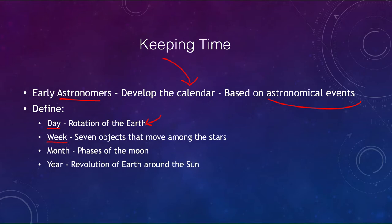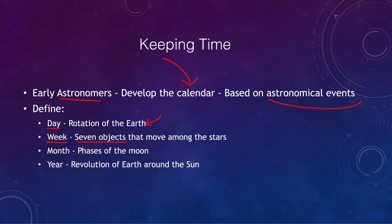A week is something students sometimes ask about — how is a week related to astronomical observations, and why do we have seven days and not eight, ten, or five? There were seven objects that move among the stars, and each day of the week is named after one of those objects. We have Sunday for the sun, Monday for the moon, and the others are named for Mercury, Venus, Mars, Jupiter, and Saturn.